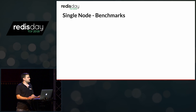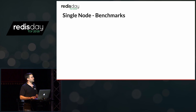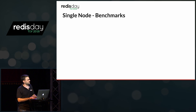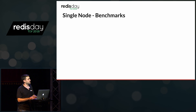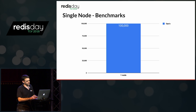I ran some benchmarks on Google Cloud using two-CPU nodes for Redis and basically started throwing messages at it. It reached about 100,000 messages per second, which is a good start, but it wasn't enough.